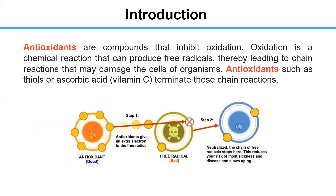Next is a new term: antioxidants. Antioxidants are compounds that inhibit oxidation. Oxidation is a chemical reaction that can produce free radicals, leading to chain reactions that may damage the cells of organisms. Antioxidants such as iodides or ascorbic acid — also called vitamin C — can stop these chain reactions. Antioxidants give an extra electron to free radicals. After the free radical is neutralized, the chain of free radicals stops. This reduces your risk of most diseases and slows the aging process. So I suggest you eat more fresh vegetables and fruits.